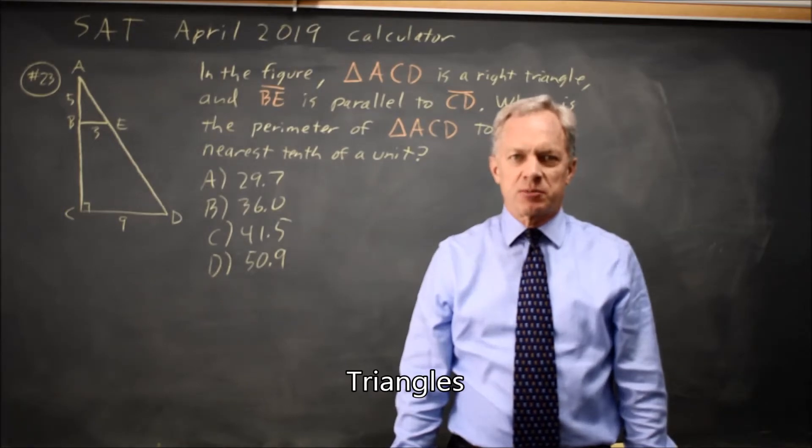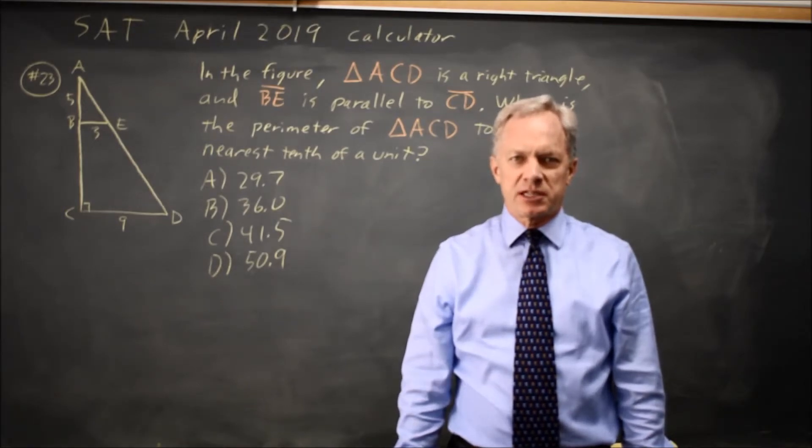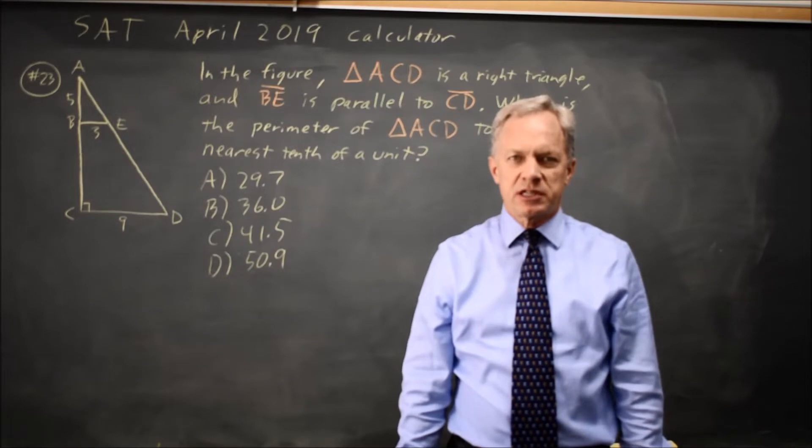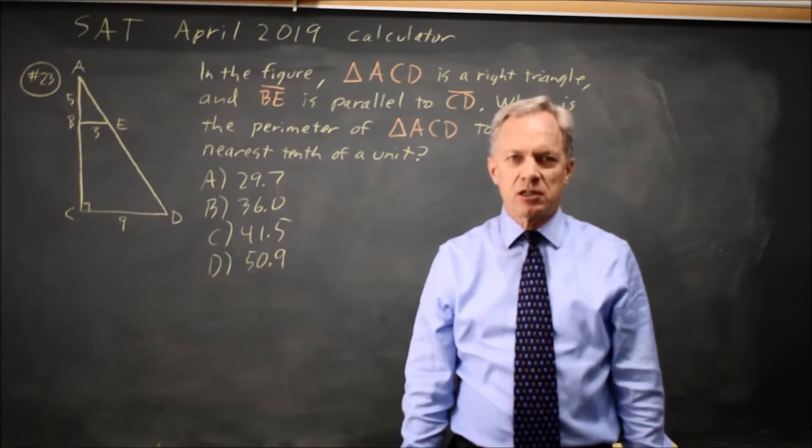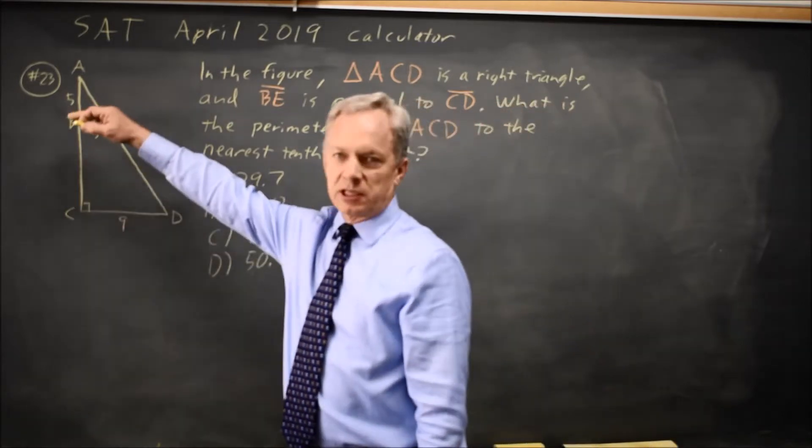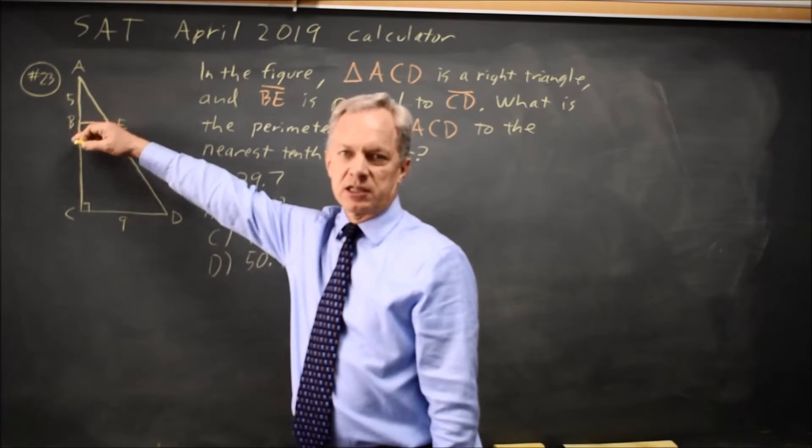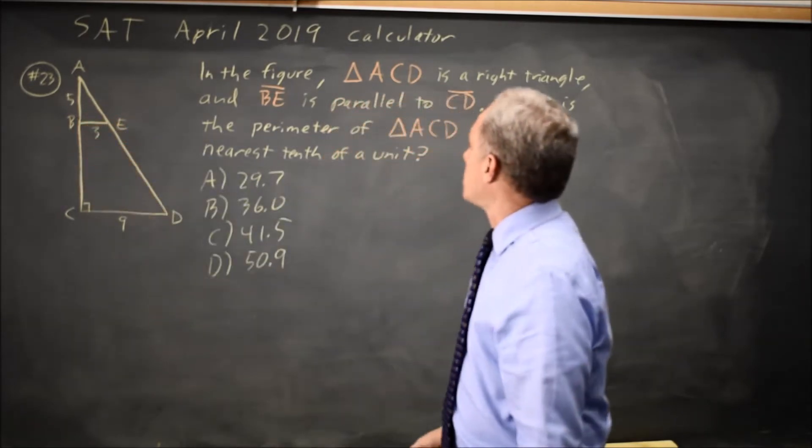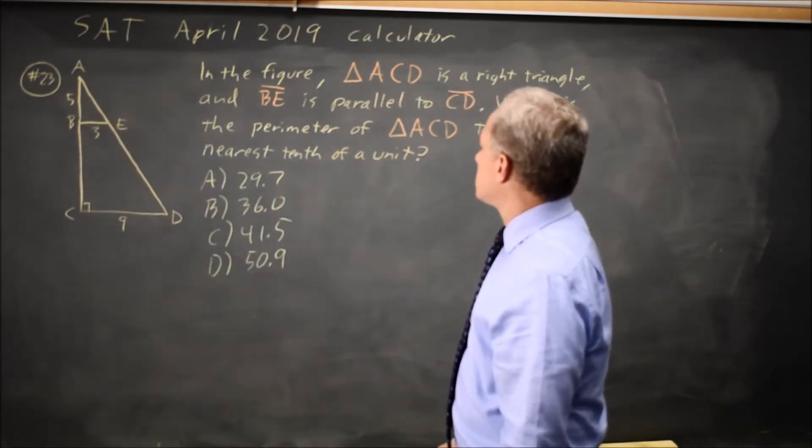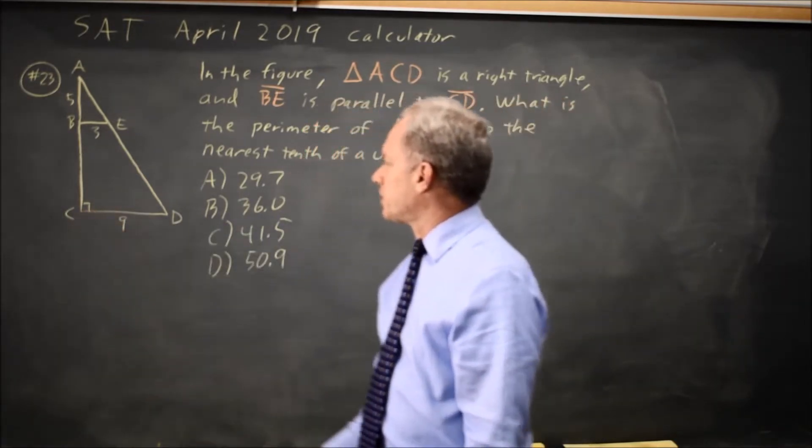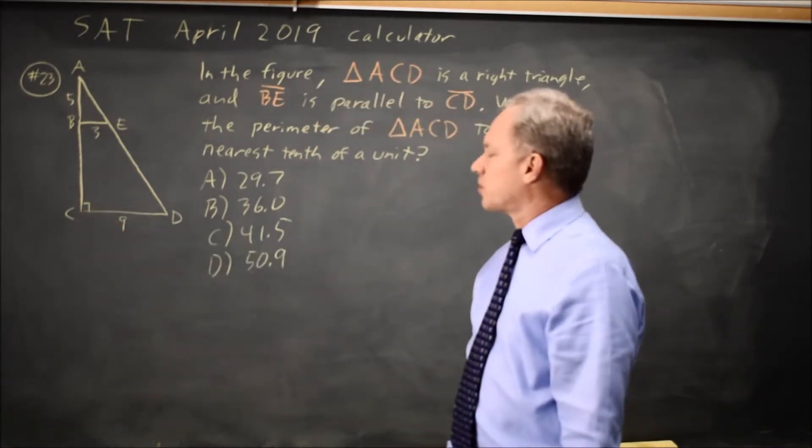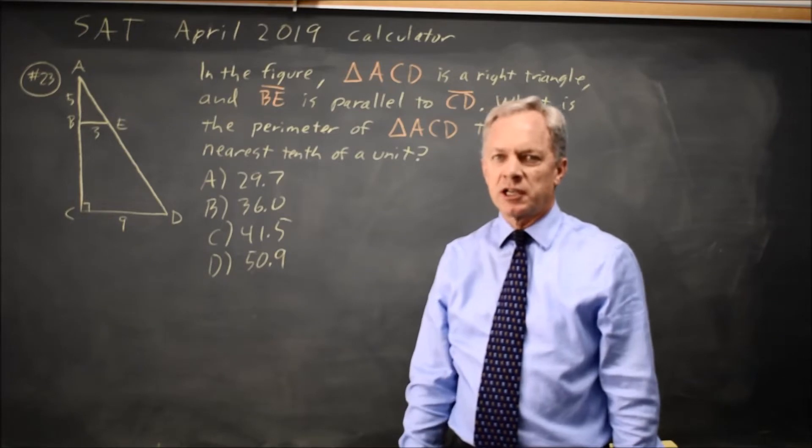This is calculator question number 23 from the April 2019 SAT. College Board gives us a diagram of a triangle where the base of the triangle is parallel to another line inside the triangle, and they tell us this is a right triangle with the right angle indicated at C, and asks for the perimeter of the larger triangle.